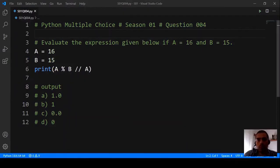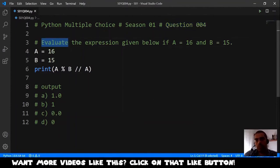Let's take a look at question number 4. The question is: evaluate the expression given below if A equals 16 and B equals 15. So the expression is just this: A modulo B floor division A.